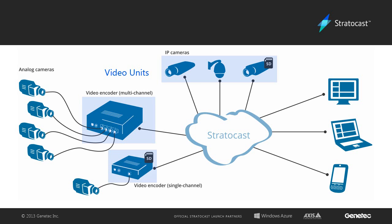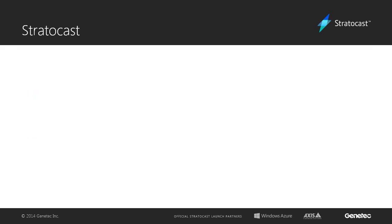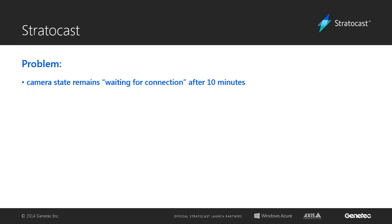Troubleshooting an AXIS video unit that is not connecting. Video units can be IP video cameras or multiple port video encoders that are used to connect analog cameras to the network. When you are adding a video unit, there are several steps that can be done to resolve an issue where the camera state does not change from waiting for connection to connected before 10 minutes has passed.